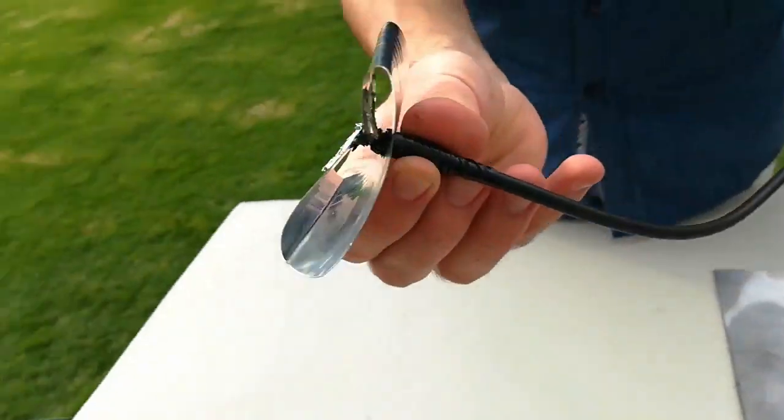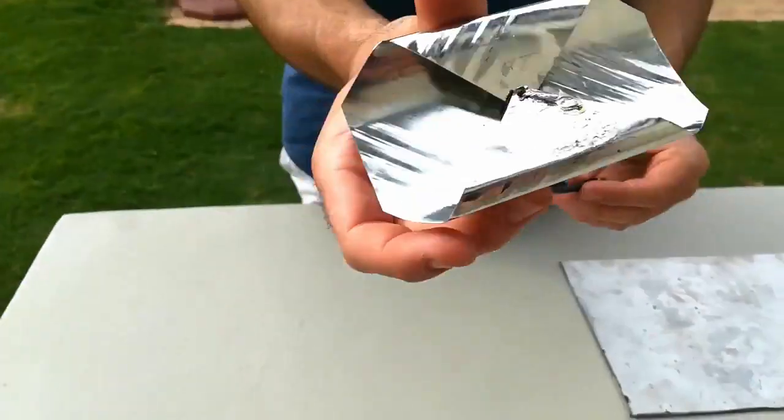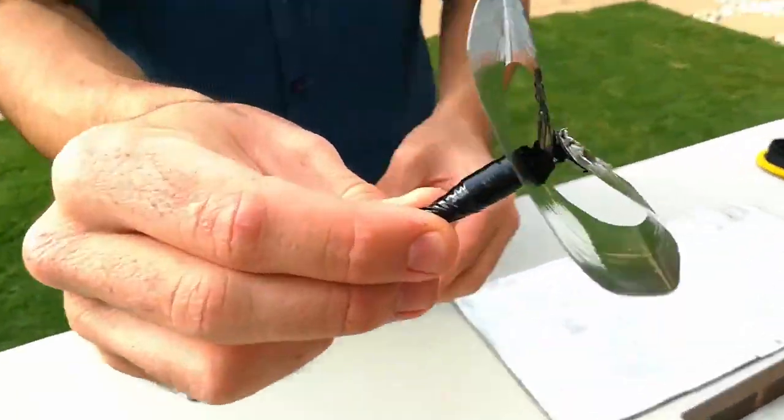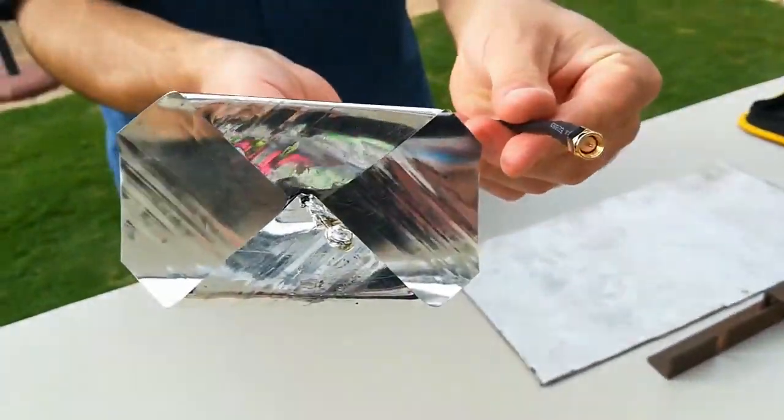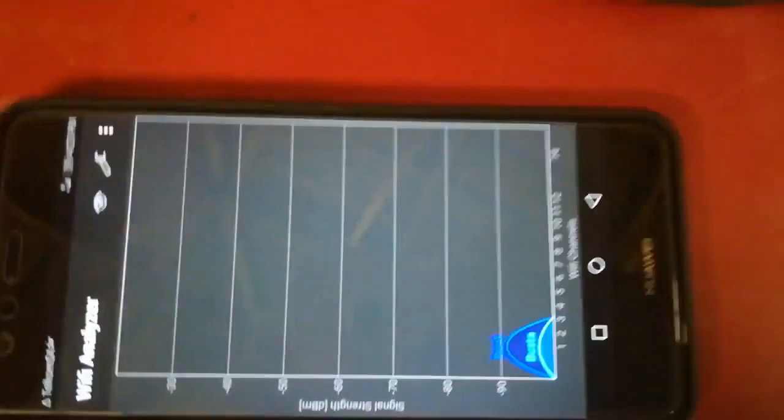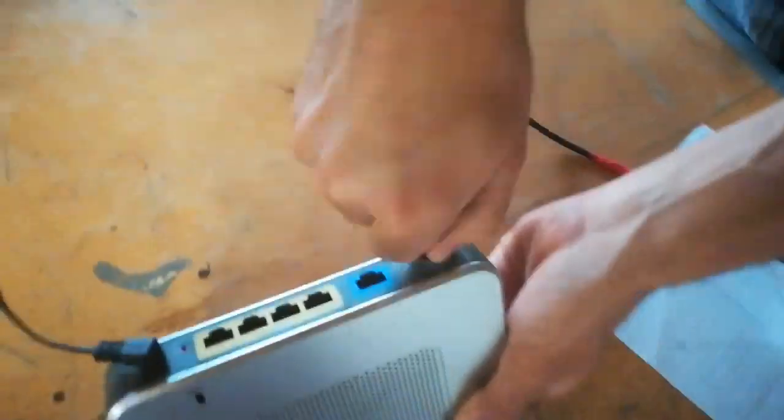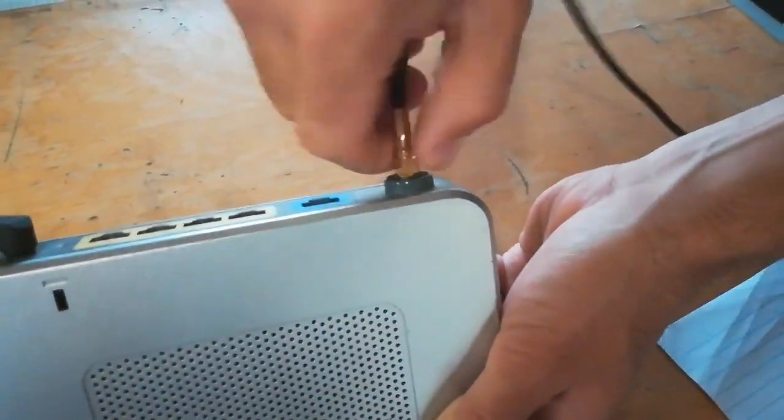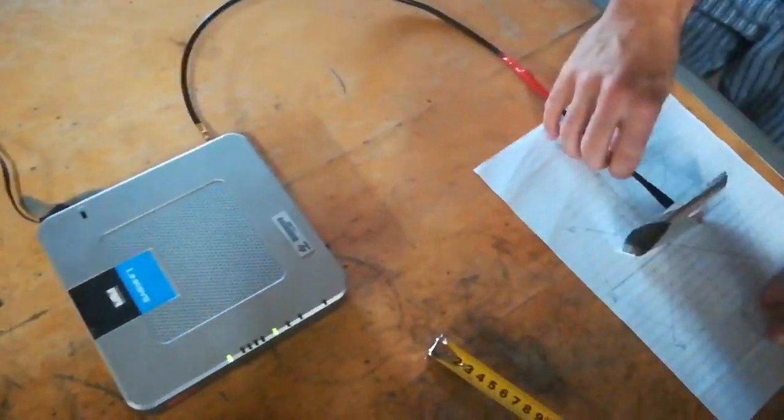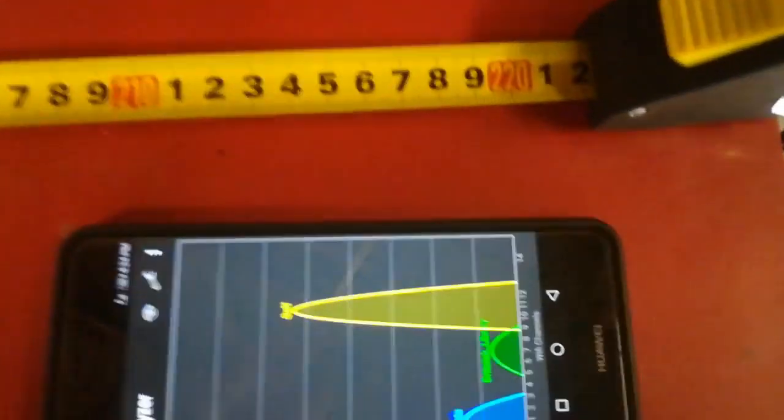If built correctly and dimensions followed accurately, the finished product should be able to work with any dual band Wi-Fi modem operating between 2.4 and 2.5 GHz or 5 to 6 GHz. Here you can see me testing mine on a 2.4 GHz modem from 2.4 meters away. Notice the lack of yellow graph before attaching the antenna and the size of that yellow signal strength graph after attaching it. So go out, give it a try and thanks for watching.